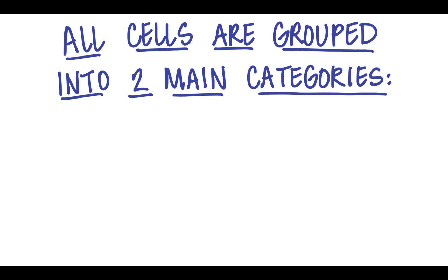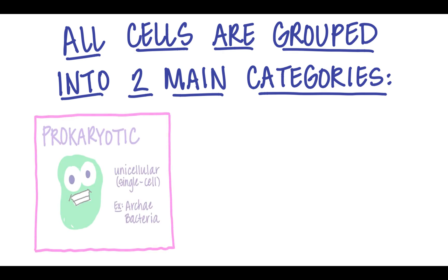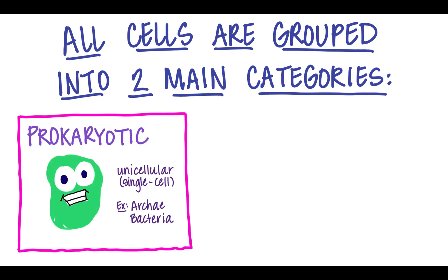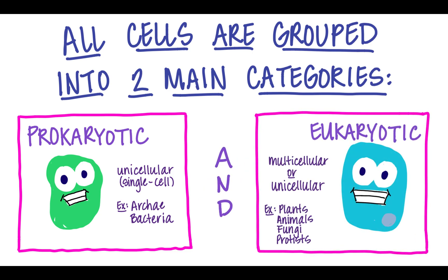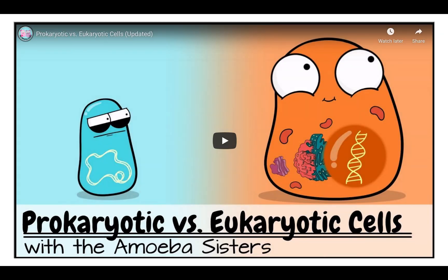All cells are grouped into two main categories. They can be either prokaryotic or they can be eukaryotic. We're going to discuss similarities and differences between these two categories today. Let's watch a short video that describes the similarities and differences between prokaryotic and eukaryotic cells.